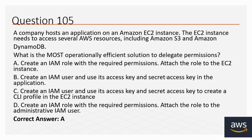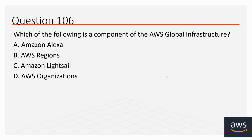Question number 106: Which of the following is a component of the AWS global infrastructure? Options: A. Amazon Alexa, B. AWS Regions, C. Amazon LightSail, D. AWS Organizations. The correct answer is B, AWS Regions.